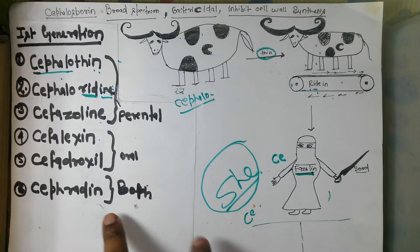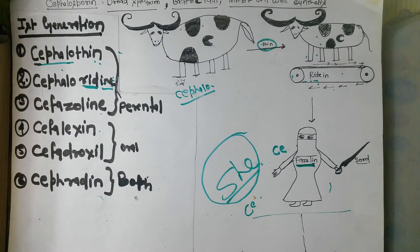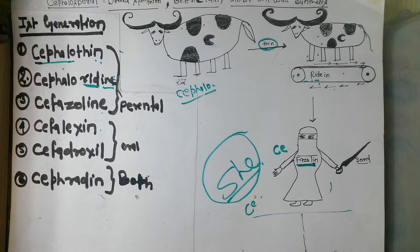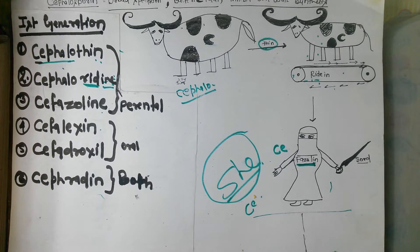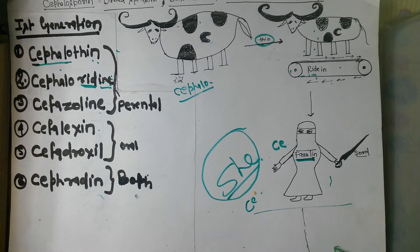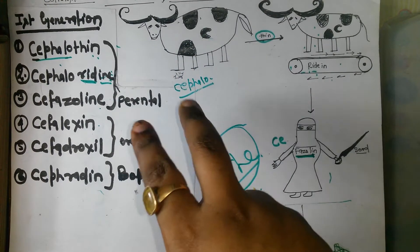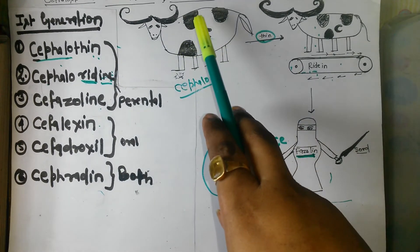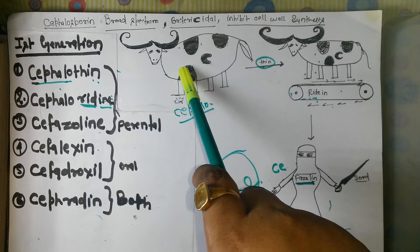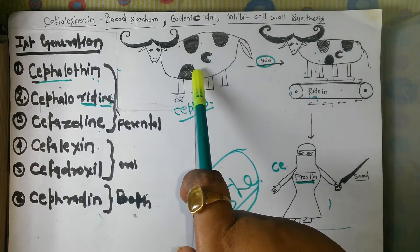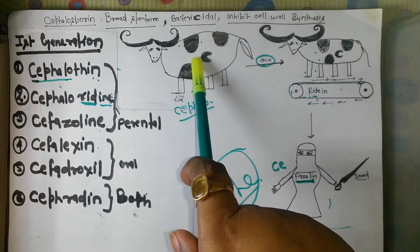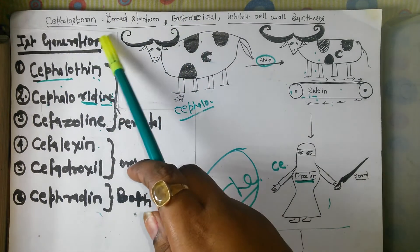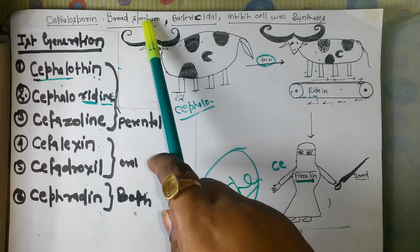So this is the cephalosporin first generation, and there are six drugs in this group: Cephalothin, Cephaloridine, Cefazolin, Cephalexin, Cefadroxil, and Cefradine. There is a fellow who is the brother of a buffalo, and he is very fat — broad. He wants to be thin and is very aggressive; he can kill anyone, and if he collides with a wall, the wall becomes brick.